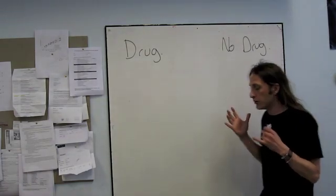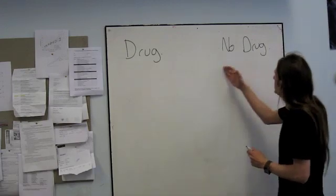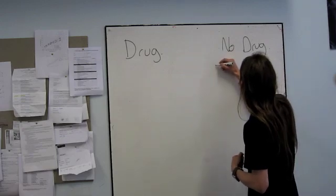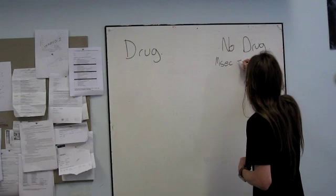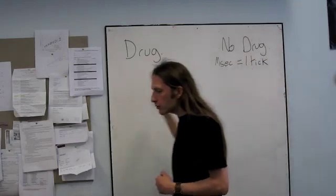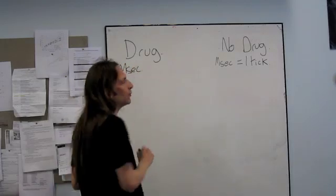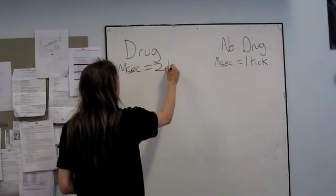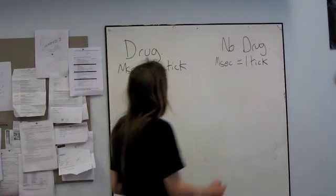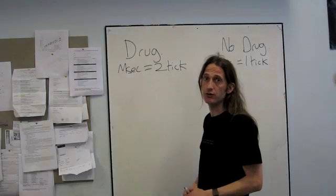Let's just imagine that our hypothesis is correct and amphetamine speeds up the internal clock. In the no-drug condition, let's assume that for every millisecond, we get one tick of our internal clock. And under the drug, we're assuming the clock is running faster — so in this condition, we assume that for every millisecond, we're going to have two ticks of the internal clock. So under the drug, the internal clock is going twice as fast. In our naive experiment, we're going to test this person off the drug and on the drug.